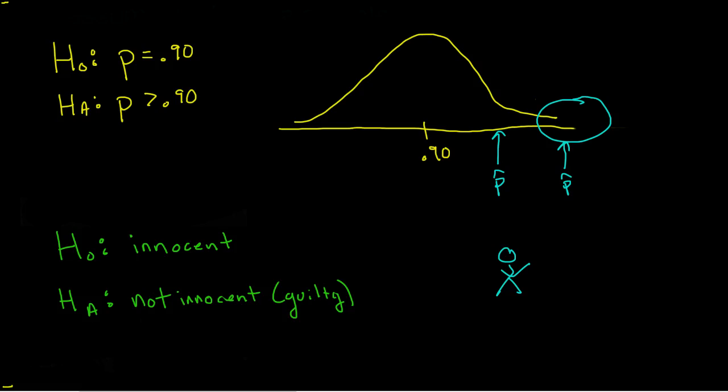Or another type of error could be that a guilty man goes free. So the alternative is true. This suspect really is guilty of his crime. But the jury, for whatever reason, finds that he is not guilty. They don't have enough evidence to say that he did it. So again, this is hypothetical. We hope these things don't happen, but sometimes they do.